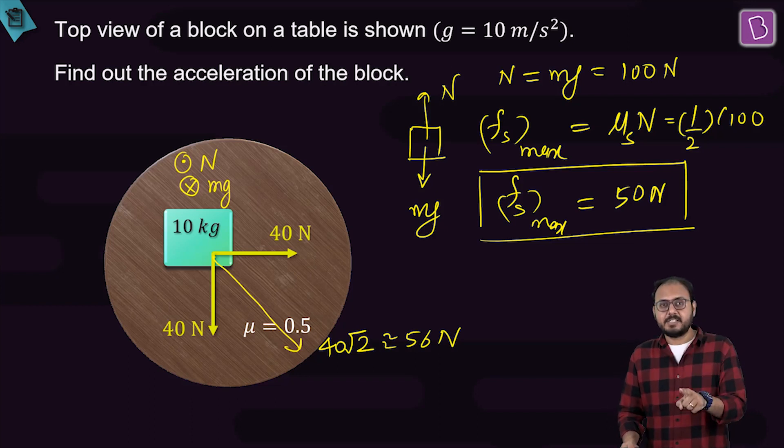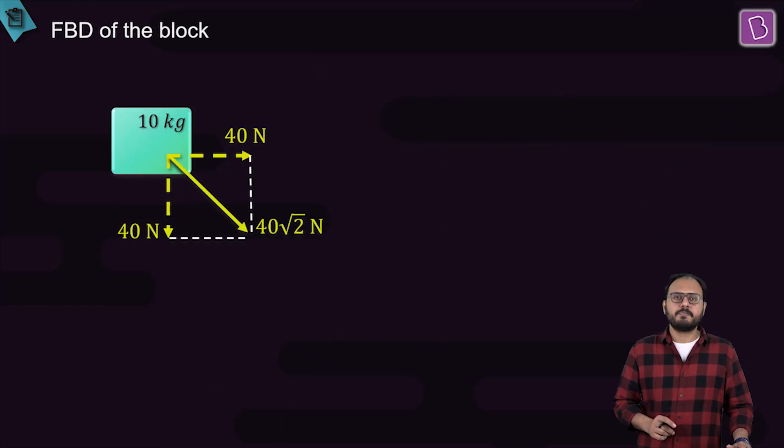If it slides, what is the nature of friction acting? The nature of friction is kinetic. What is kinetic friction? A value equal to mu k times N.